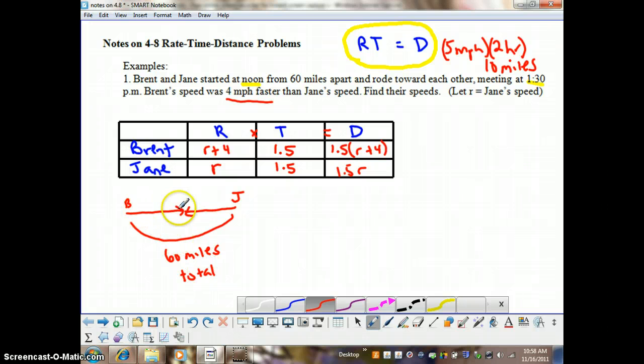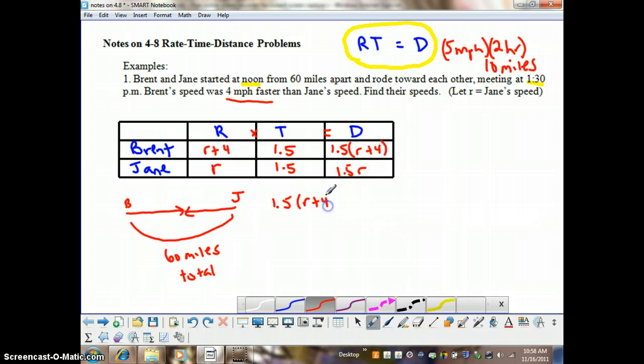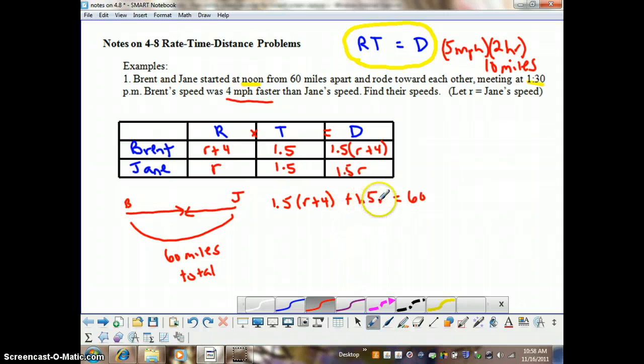Brent is traveling a certain distance, and Jane is traveling a certain distance, and in total, they'll have traveled 60 miles. So, what we want to do here is add our two distance amounts together. So, the distance Brent traveled plus the distance Jane traveled, and that's going to equal 60. So, we have 1.5 times the quantity r plus 4 plus 1.5r equals 60.